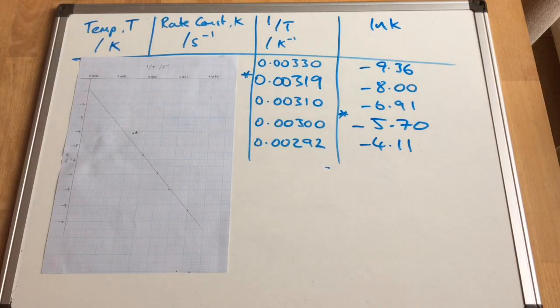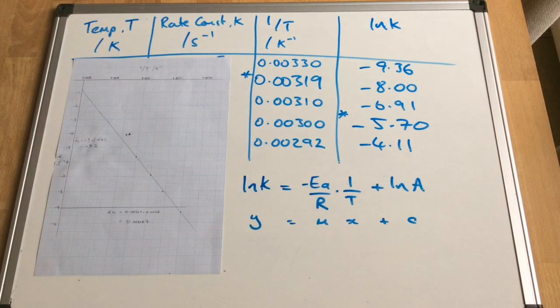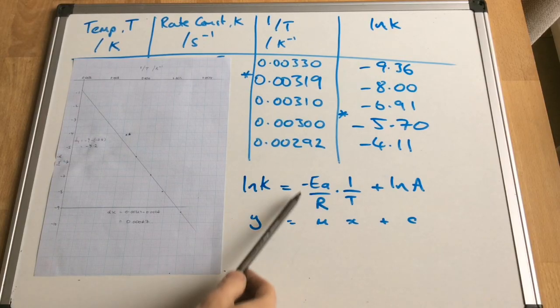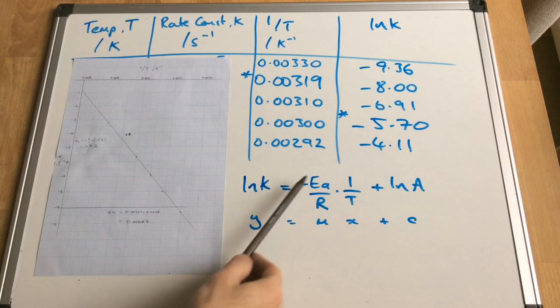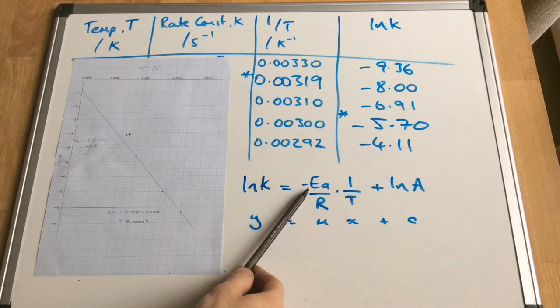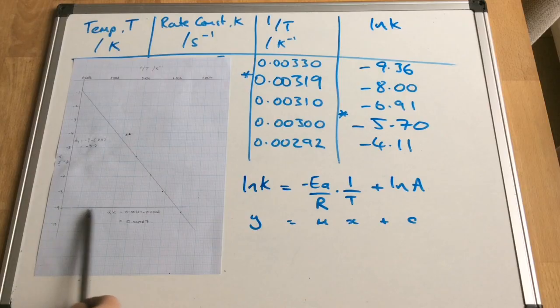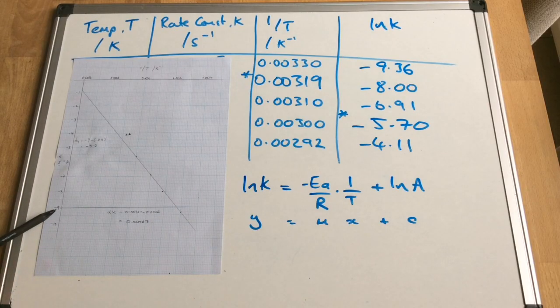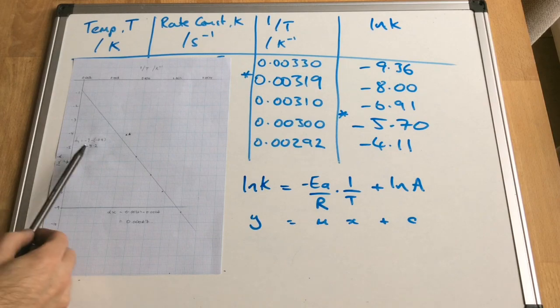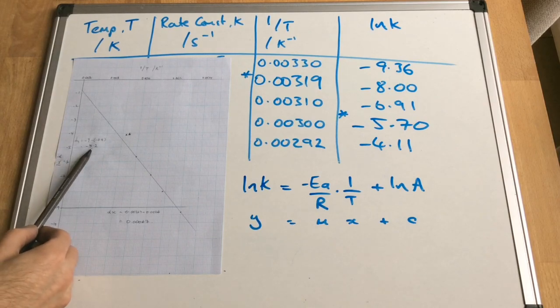Rule of thumb is to try and cover at least half of the graph paper. So to calculate the activation energy, we ultimately need to calculate the gradient of the line, because within the gradient term, we've got our activation energy. So looking at my graph here, I've created this triangle here, which I've chosen to go down to negative 9 on the y-axis.